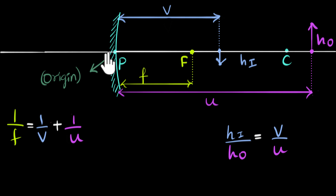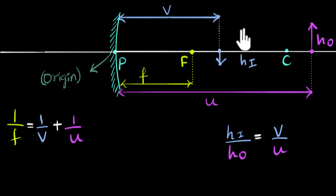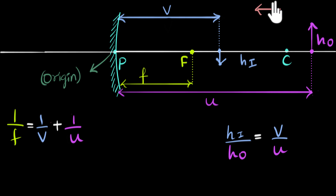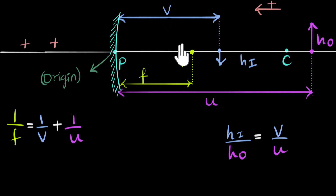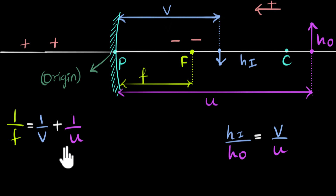If we build this formula with appropriate signs, we'll end up getting the general formula. To get the signs, we have to choose one direction as positive and one as negative. We're always going to choose the incident direction as positive. Over here, the object is here and the mirror is over here, so the incident rays are going towards the left, which means we choose the left direction as positive. All positions to the left of the origin will be positive, and all positions to the right will be negative.